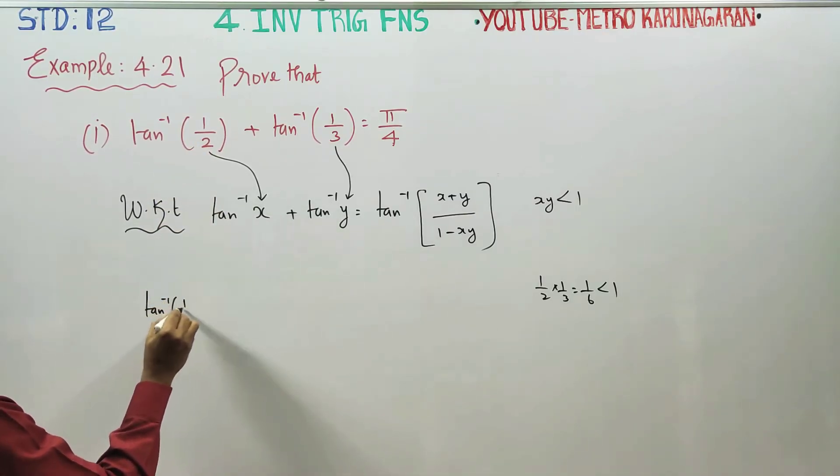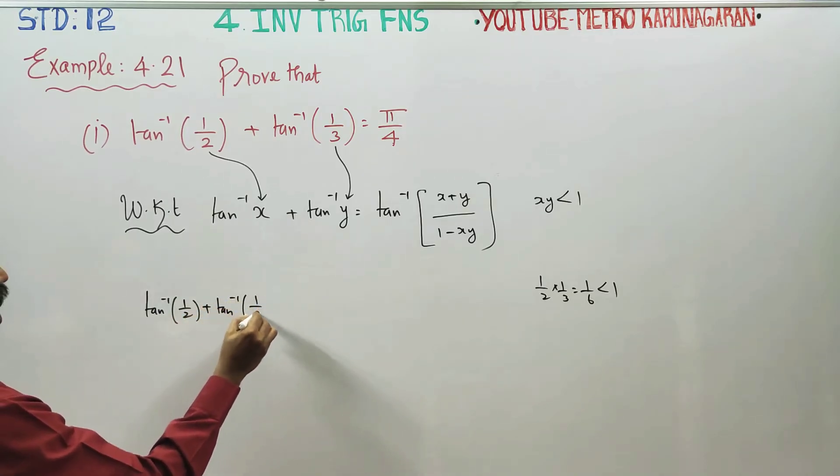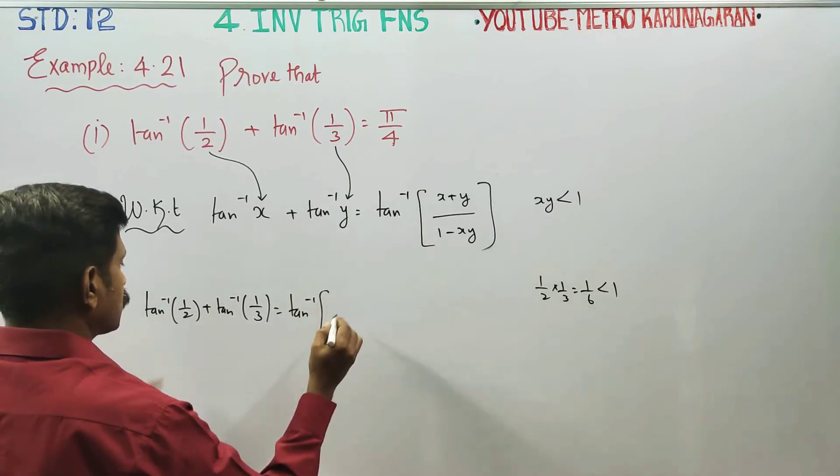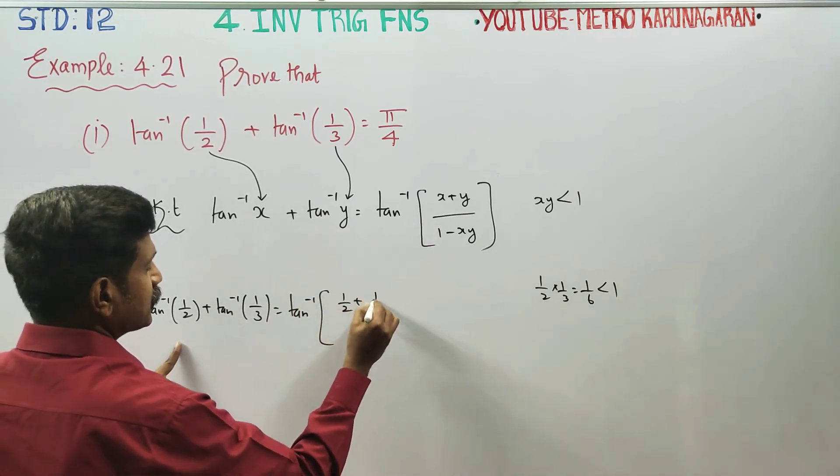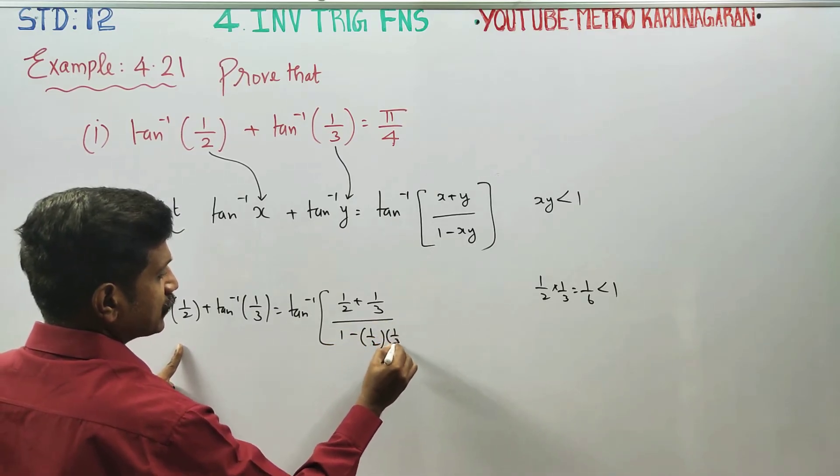Tan inverse of 1 by 2 plus tan inverse of 1 by 3 is equal to tan inverse of x plus y: 1 by 2 plus 1 by 3 by 1 minus 1 by 2 into 1 by 3.